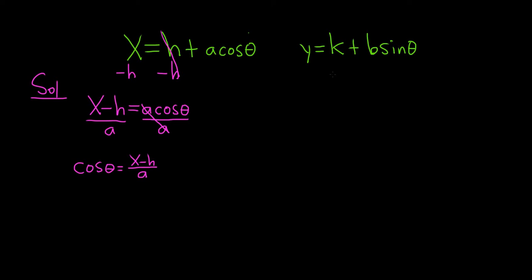Over here we do the same thing. We subtract k from both sides, so we end up with y minus k equals b times the sine of theta. And as before, to finish solving for the sine function, we'll divide both sides by b. So we have the sine of theta is equal to y minus k over b.